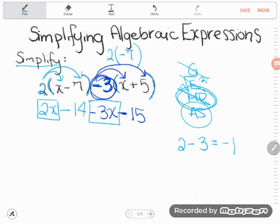So if I have two x's and I take away three x's, I'll have negative 1x. Now, I'm going to write that down. Negative 1x.